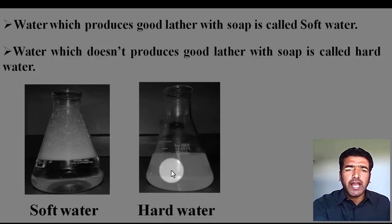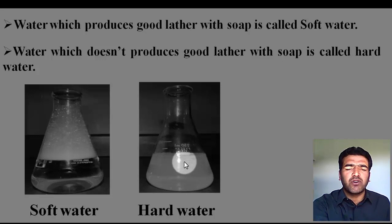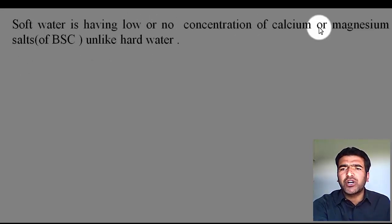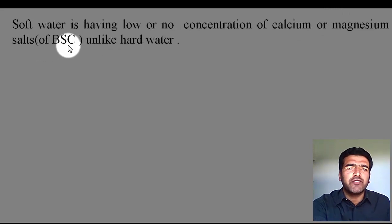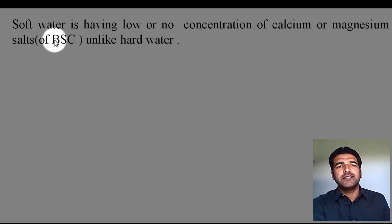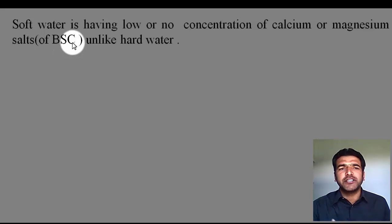Now the question is: why does hard water not produce foam or lather with soap? Obviously there must be something dissolved in this hard water which prevents it from producing lather. Soft water has low or no concentration of calcium and magnesium salts, unlike hard water. In hard water you have salts of BSC — B stands for bicarbonates, S stands for sulfates, and C stands for chlorides — meaning bicarbonates, sulfates, and chlorides of calcium and magnesium ions. Soft water does not contain any bicarbonate, sulfate, or chloride of calcium or magnesium.